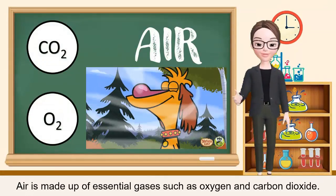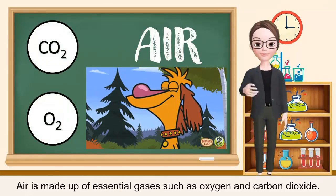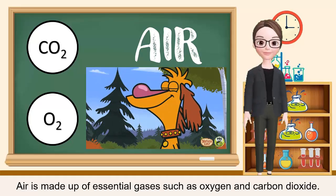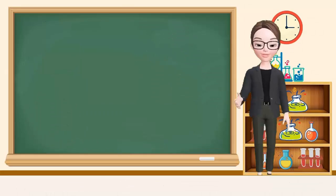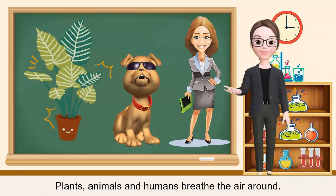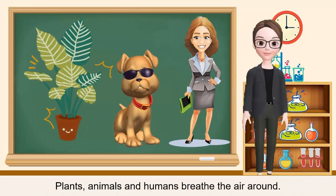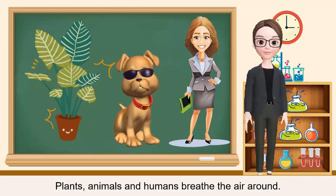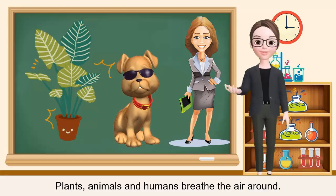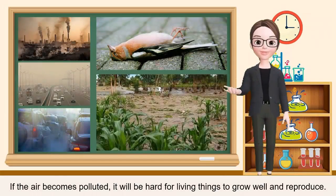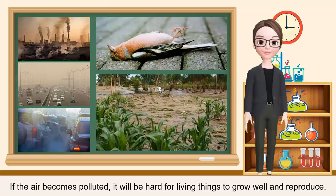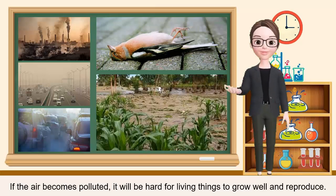First, we have the air. Air is made up of essential gases such as oxygen and carbon dioxide. Plants, animals, and humans breathe the air around. If the air becomes polluted, it will be hard for living things to grow well and reproduce.